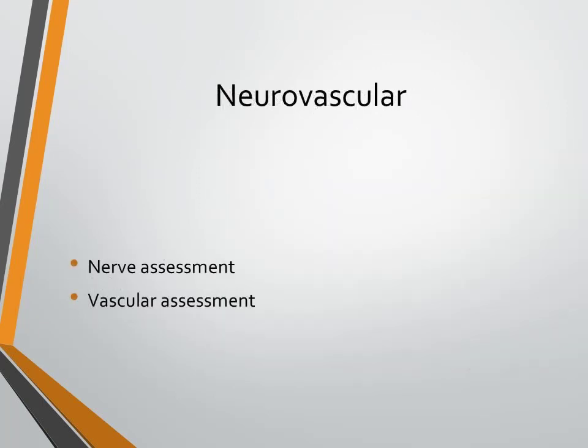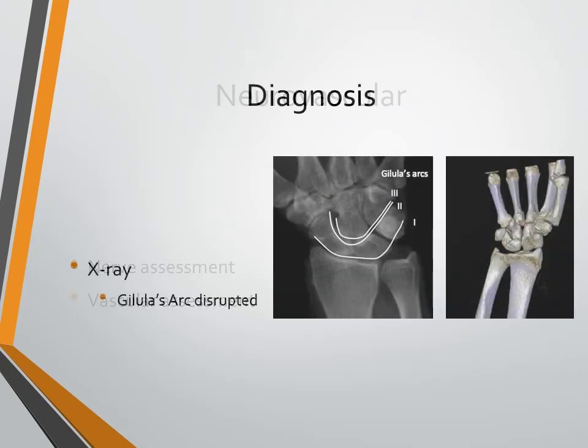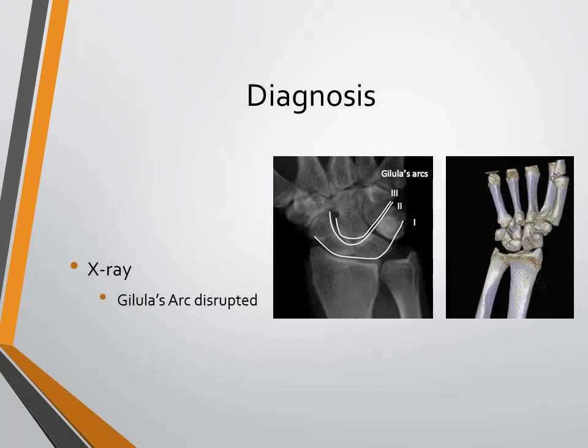Both a nerve and vascular assessment should be performed. Diagnosis will be through an X-ray and it will show that Gilula's arc is disrupted. You can see on the left what the arcs look like. On the right, you will notice that the bones tend to be a little bit more jumbled and you couldn't create arcs.